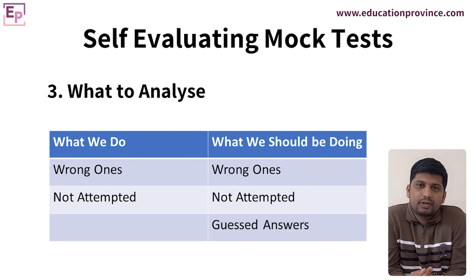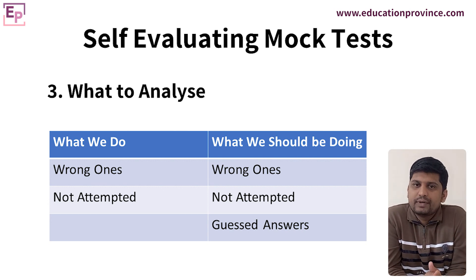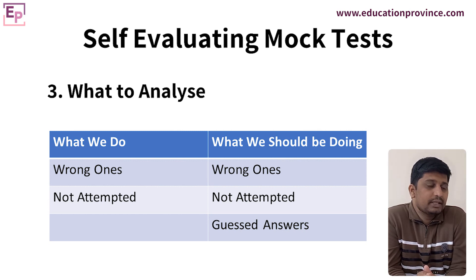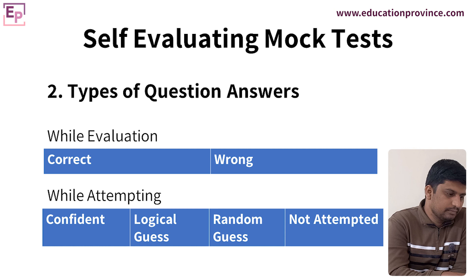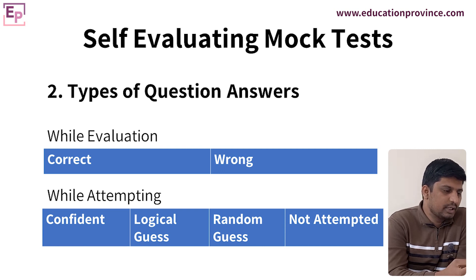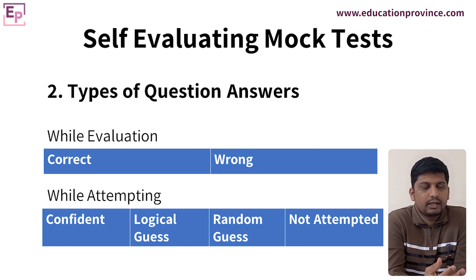But there is one very important thing we usually forget. Ideally, we should analyze not just the wrong answers and unattempted questions, but also the questions for which we guessed the answer in the first place. There are four categories: confident, logical guess, random guess, and not attempted. The last three categories — logical guess, random guess, and not attempted — we have to analyze, irrespective of whether the answer was correct or wrong. And even in the confident category, if the answer was incorrect, we have to analyze.